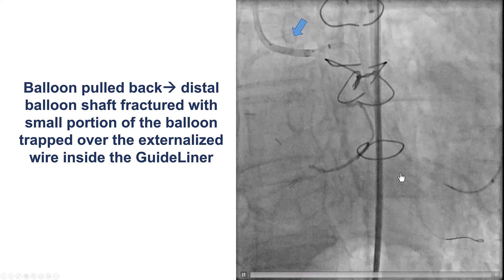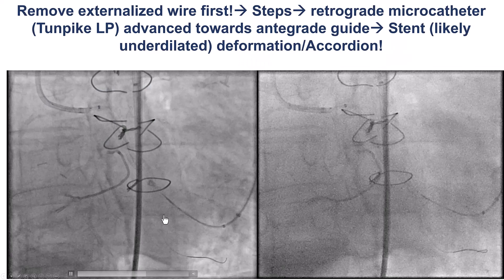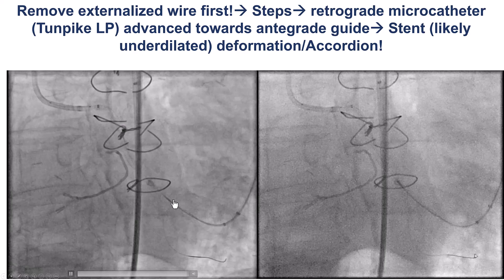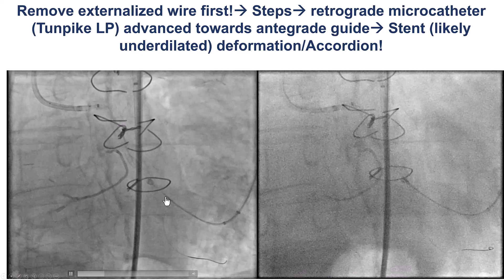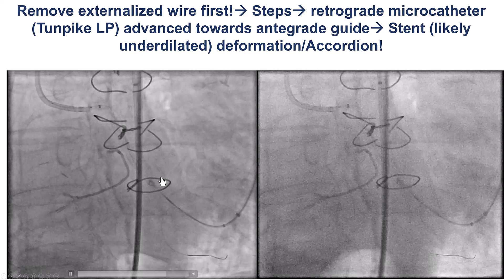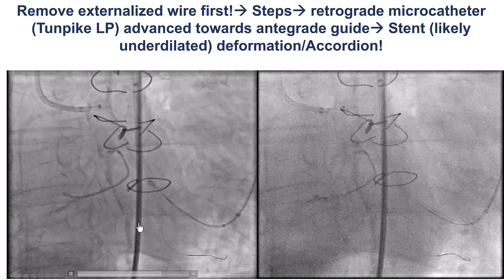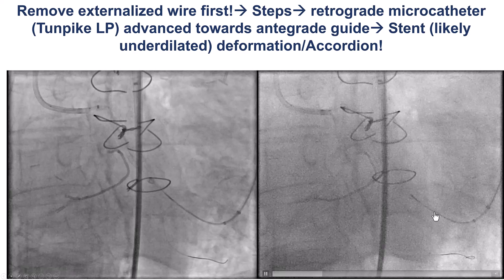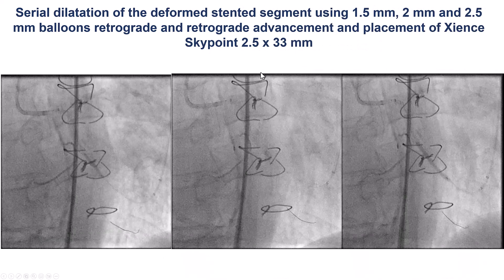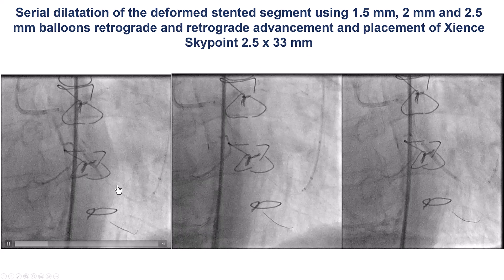We could not remove the fractured balloon while the externalized wire was still in place, so the first step was to remove the externalized guide wire. To do this, we tried to advance the retrograde Turnpike LP, but another problem occurred — we had not fully expanded the distal stent. Advancing the retrograde microcatheter caused longitudinal stent deformation, the so-called accordioning effect of the stent. To deal with this, we used sequentially larger small balloons — 1.5, 2.0, 2.5mm — to dilate the accordion and restore the lumen.